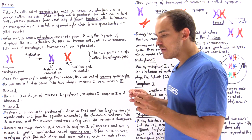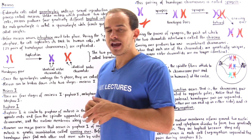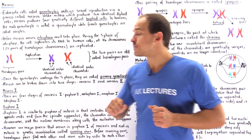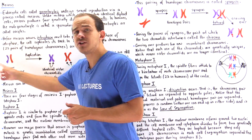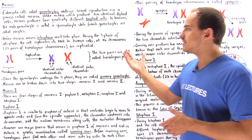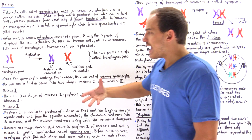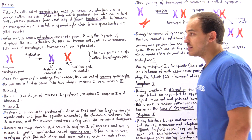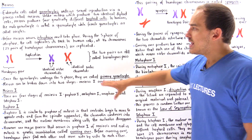During interphase, we have a phase known as the S phase, and during the S phase, the DNA is replicated. In humans, where we have 46 chromosomes, all 46 chromosomes — or 23 pairs of homologous chromosomes — are replicated during the S phase of interphase. So our DNA is actually replicated before meiosis takes place, in the same way that DNA is replicated before mitosis takes place.